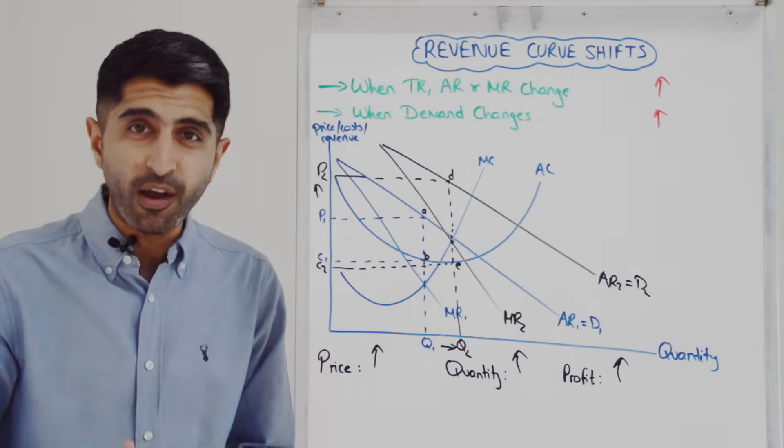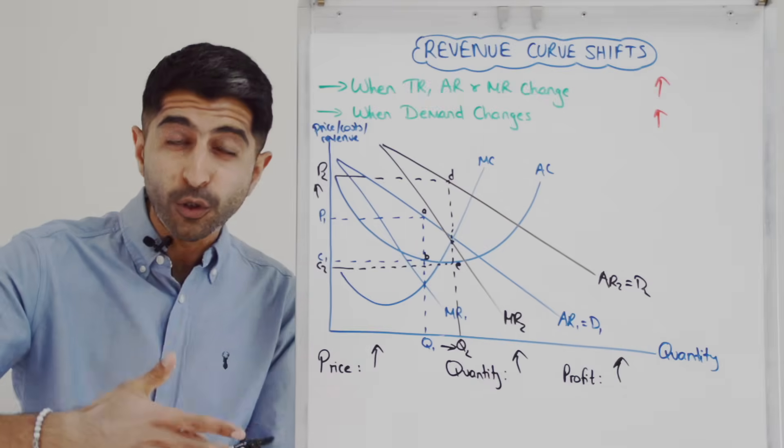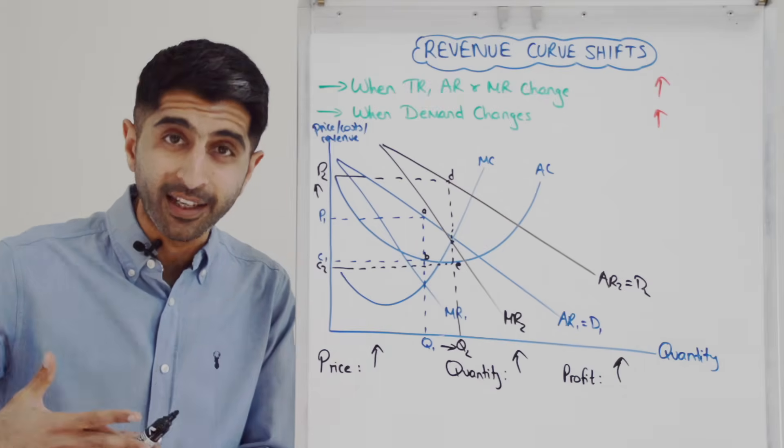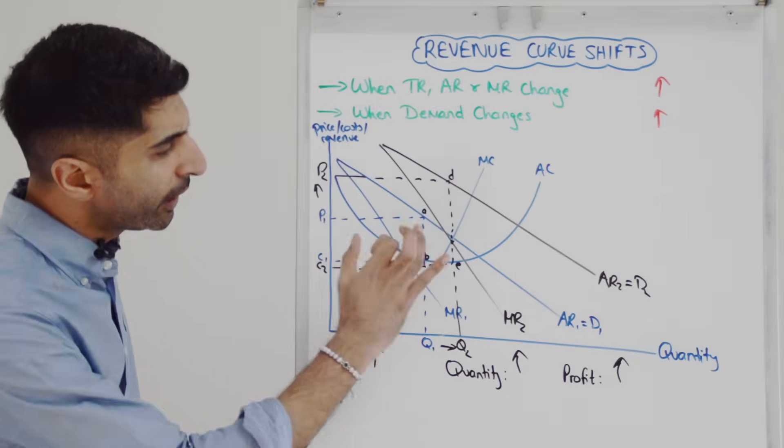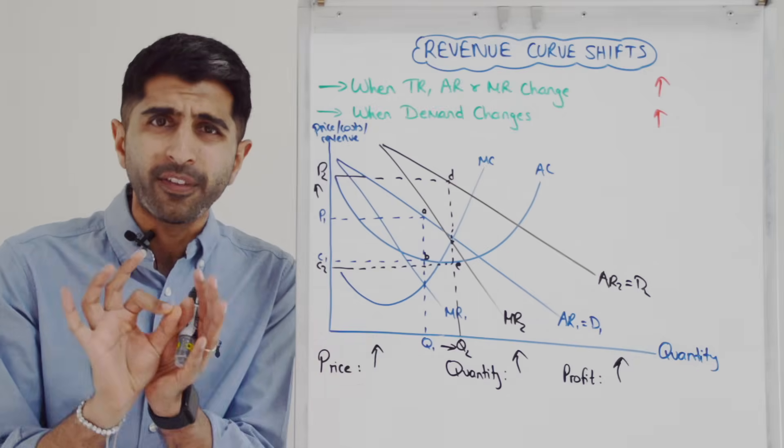So there you have it, guys. Revenue curve shifts for you. This is one way shifting right. You can do the same exercise for these curves shifting left. Make sure you're comfortable with it. Looks funky at the end, but you're following the same process.